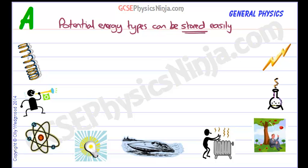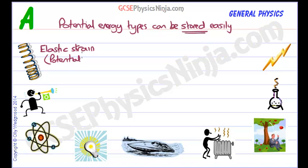First of all, a spring. If you squash or stretch a spring then you're storing a type of energy called elastic strain energy. That is a type of potential energy because you can store it, like a clockwork toy or a wind-up watch — you're storing energy when you wind it up.